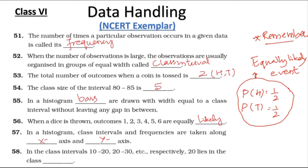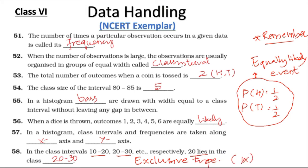Question 58: In the class intervals 10 to 20 and 20 to 30, the value 20 lies in the class 20 to 30. This type of class is considered as exclusive type. In class 9 we are going to learn in detail about exclusive and inclusive types.